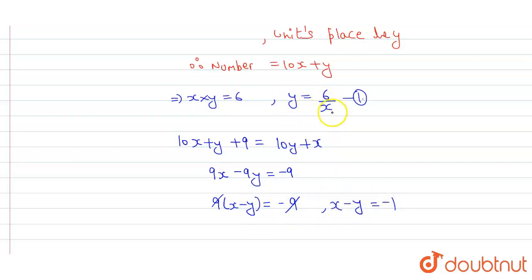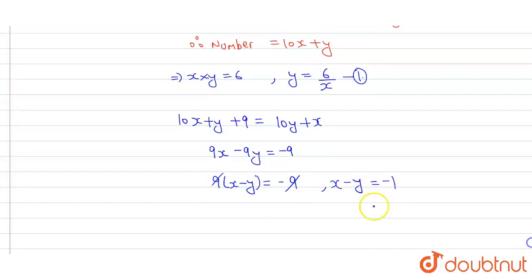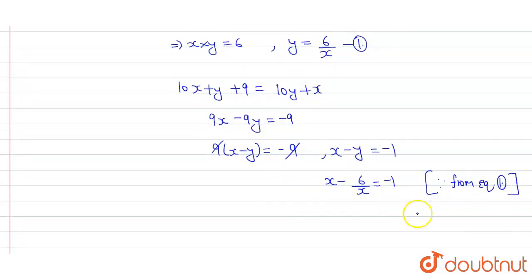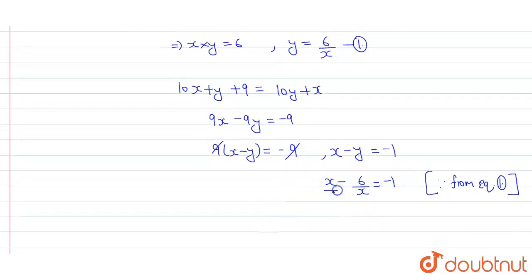From the first equation, y is 6 upon x. We will put this in the equation and get x minus 6 upon x equals minus 1. Taking LCM, we get x squared minus 6 over x equals minus 1.